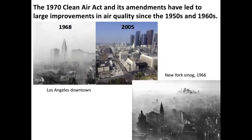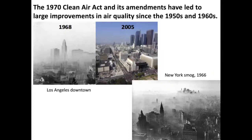Since 1970, when the Clean Air Act was inaugurated, there have been huge improvements in air quality. You can see, for example, Los Angeles, while it still has quite persistent pollution, is much cleaner than it was in the 1960s. And you can also see smog just blanketing New York in the 1960s. So we really have to take our hats off to the EPA for regulating air so well, at least up till now.